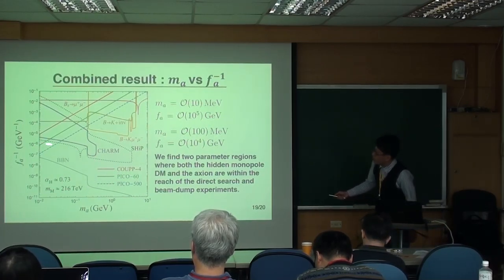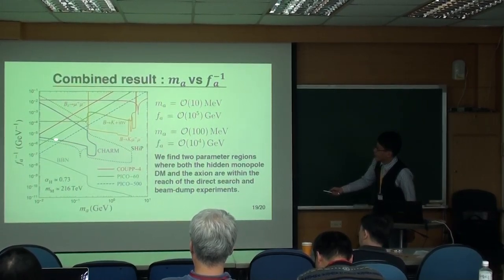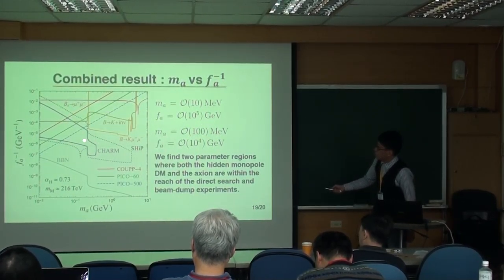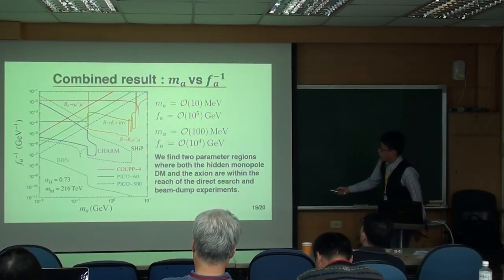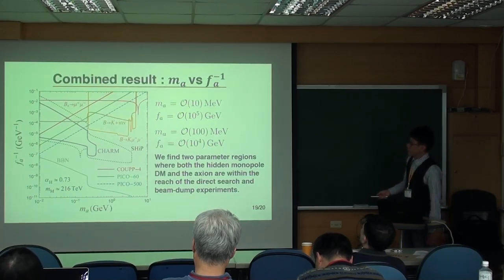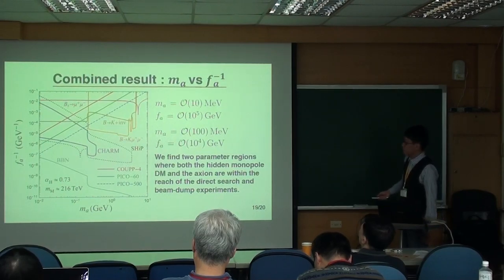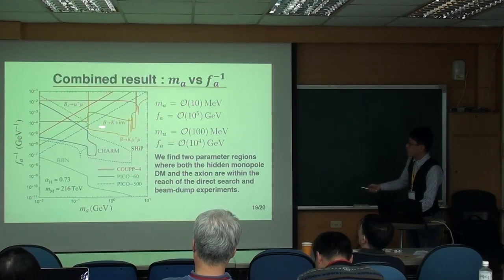So here is our combined result from the direct search experiment and the beam-dump experiments. As you can see, around m_a around 10 MeV and f_a around 10^5 GeV, and also m_a around 1 GeV and f_a around 10^4 GeV, are the regions where both the beam-dump experiments and the direct search experiment can probe this model. We also consider some constraints from meson decays.